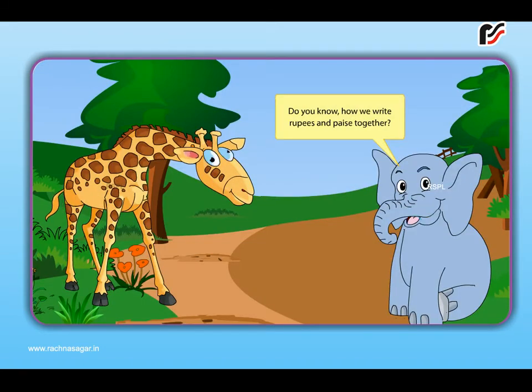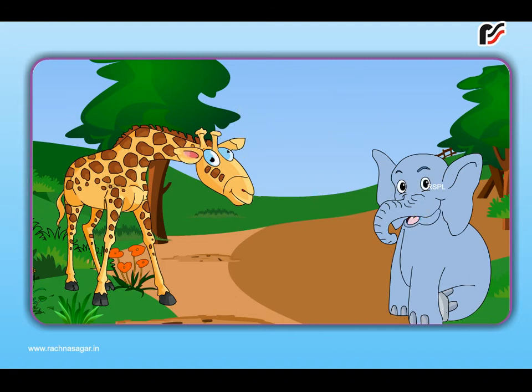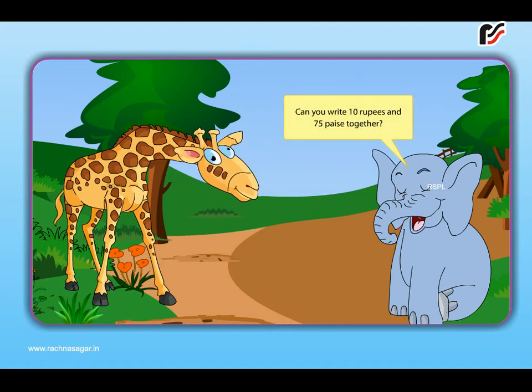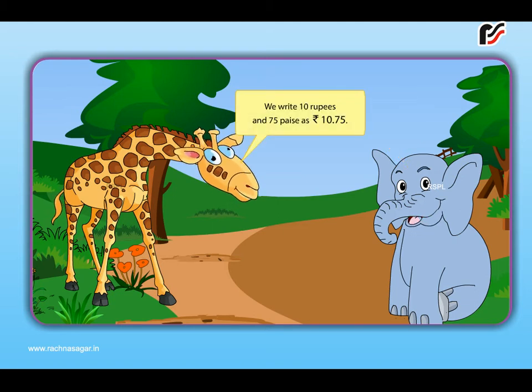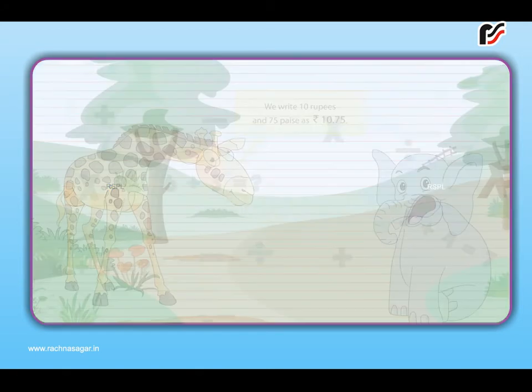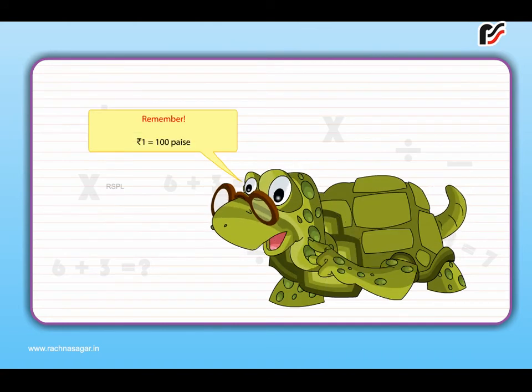Read and write money. Do you know how we write rupees and paise together? We use a small dot to separate rupees and paise. Can you write 10 rupees and 75 paise together? We write 10 rupees and 75 paise as rupees 10.75. Remember, rupees 1 is equal to 100 paise.